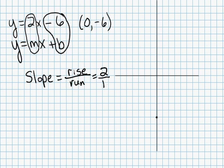Starting at my y-intercept, I'm going to rise 2 and run 1. Rise 2 and run 1. Rise 2 and run 1. And voila, I have a line.